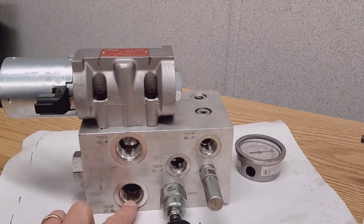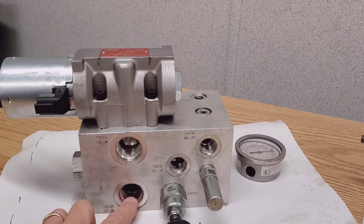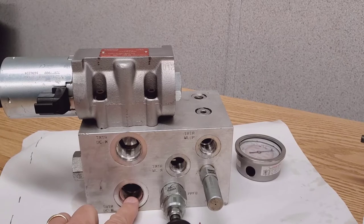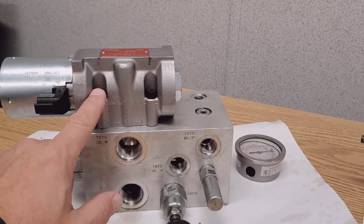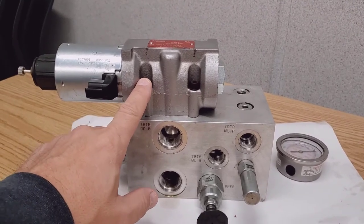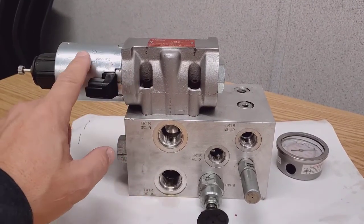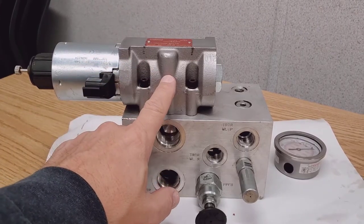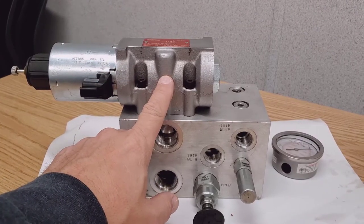Now when the oil enters our directional control valve, it comes in on the P port. And then it's ported over to our directional control valve slash solenoid. This changes from up to down, raise to lower.